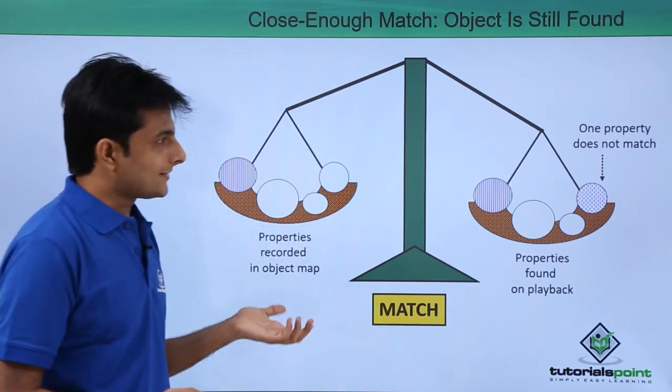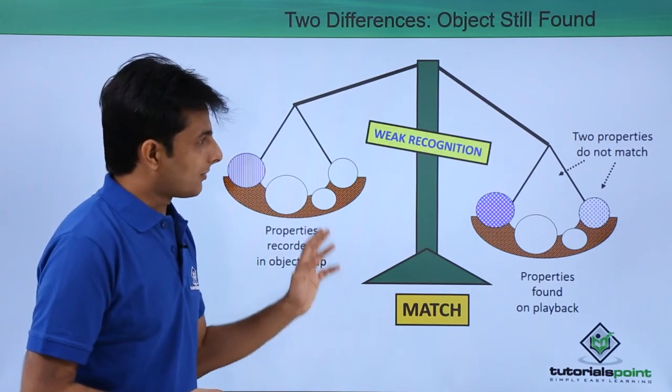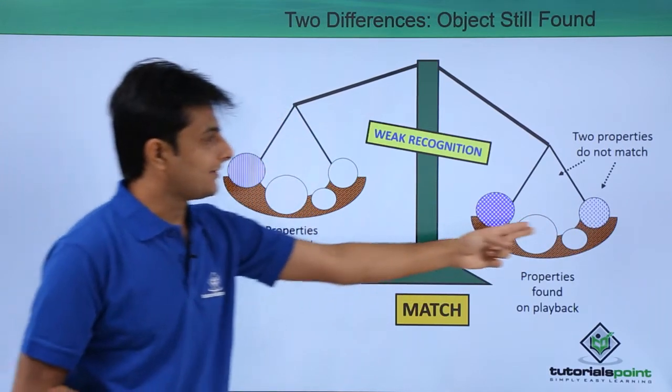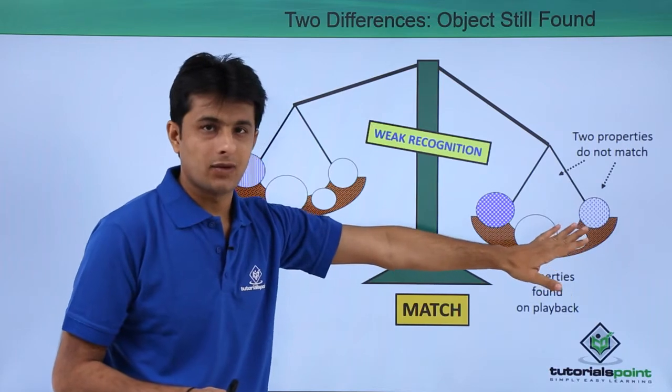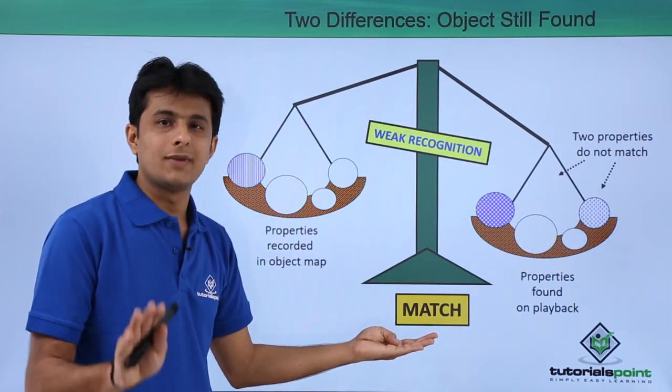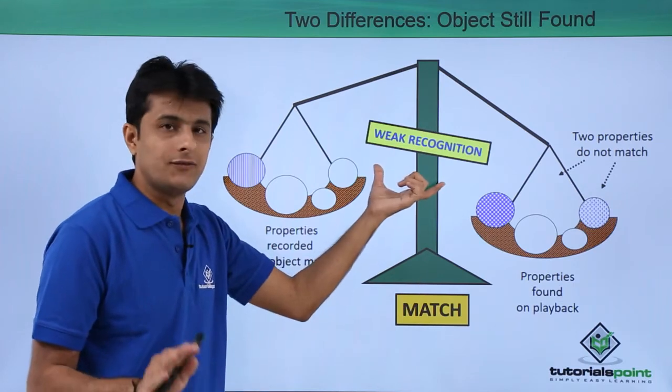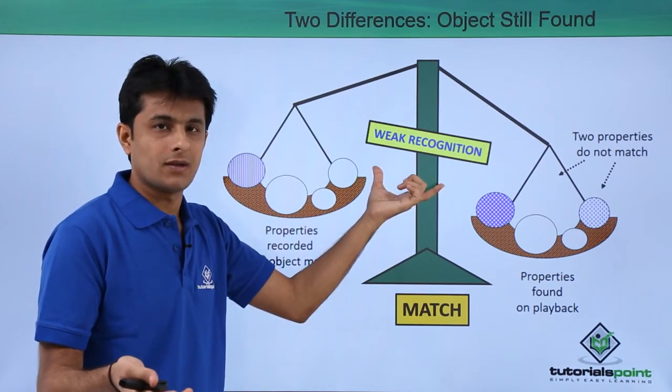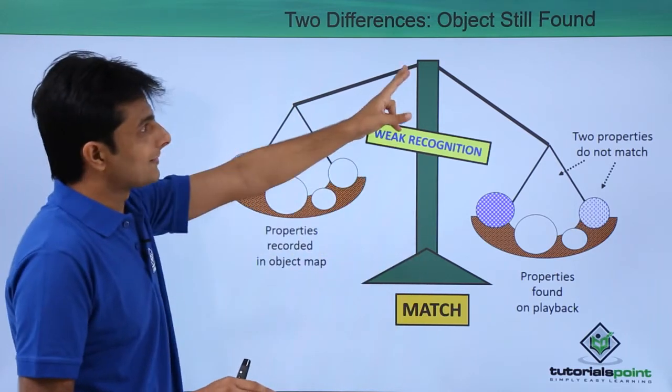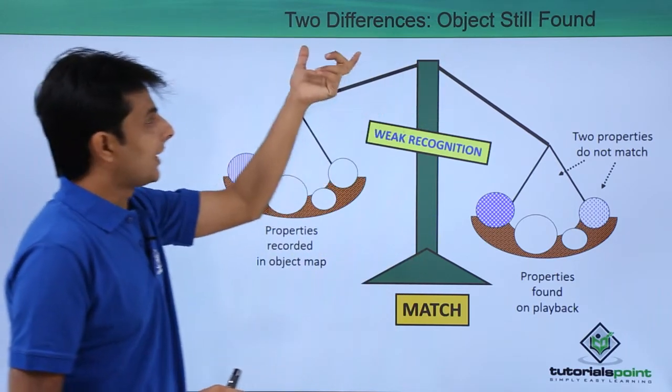Now let us see the next situation when there are multiple properties. Let's say property 1 and property 2 - both properties are not matching during playback. You can see the object is still found, but a warning message would be displayed with the weak recognition information. The object is still found - it is not giving an error message. You can see the heading: object still found. And there are two differences.